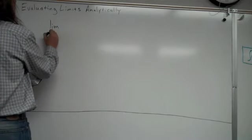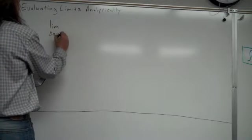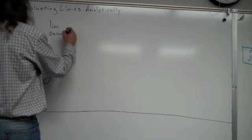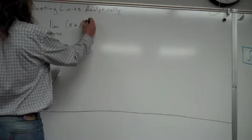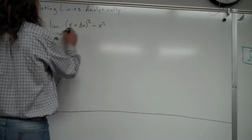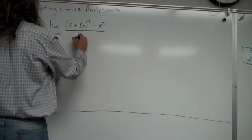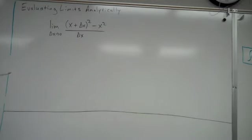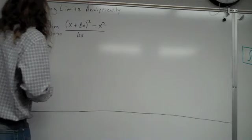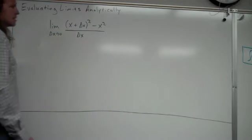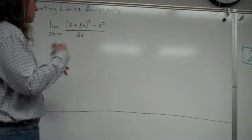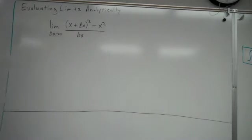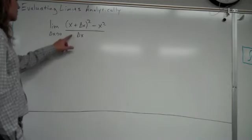The limit as delta x approaches zero of (x + delta x)² - x² all over delta x. Now, some people might look at this and be like, whoa, what the heck's up with this? There's a delta x, there's all this weird stuff. This is prepping you for what you're going to see once you start derivatives. So, this is just getting used to some notation so it's not too foreign to you once you start the derivative process, next chapter.